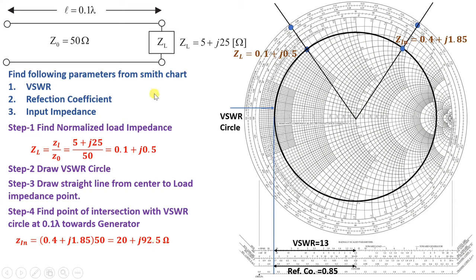To summarize: whenever given a Smith Chart question to find VSWR, first plot the VSWR circle from the load impedance point with the center as reference. Read VSWR and reflection coefficient from the scale. To find input impedance, move clockwise by the given line length (0.1 lambda here) toward the generator, intersect with the VSWR circle again, and multiply the normalized value by the characteristic impedance to get the actual input impedance.